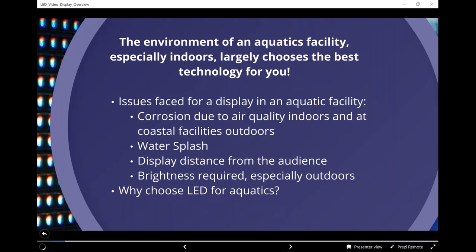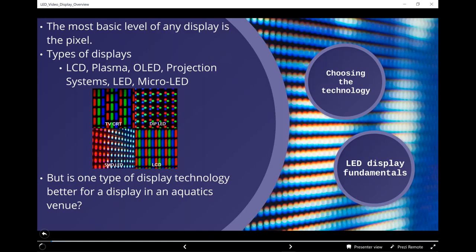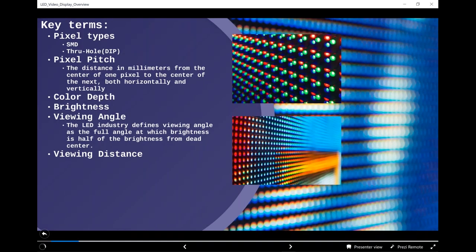Looking at the fundamentals of an LED display, there are two pixel types: SMD, or surface mount device, and through-hole, which is the DIP — dual inline package. The through-hole is what you're used to seeing as a regular LED — one red, one green, and one blue. The SMD is a square package that contains a very tiny red, green, and blue LED inside. Surface mount gives us more black space on the board, increasing our contrast and giving us better video and image clarity. Through-hole LEDs are extremely bright and work wonderfully in bright outdoor environments to overcome ambient sunlight.